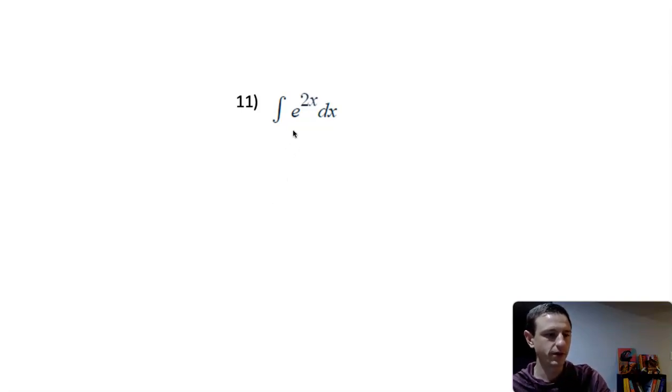Here we want to integrate e^(2x), and there are two different ways of thinking about this. One is using the exponential rule, which says if we have the integral of e^(ax) dx, the exponential rule is just 1 over a times e^(ax) plus c.